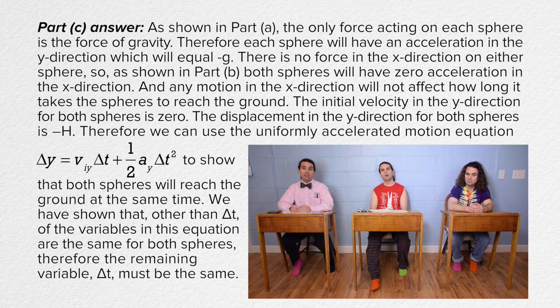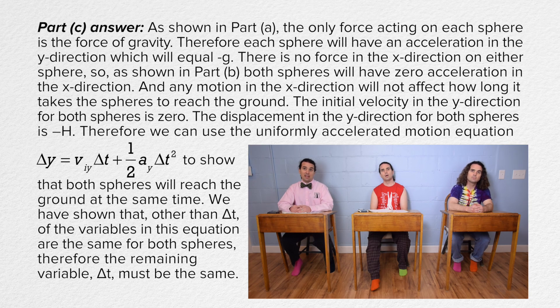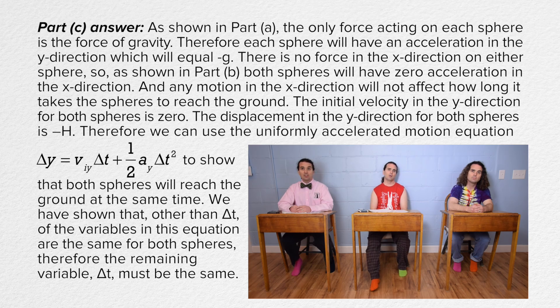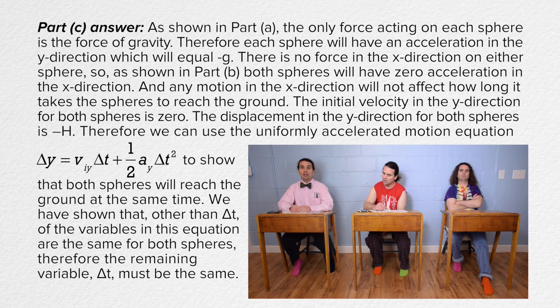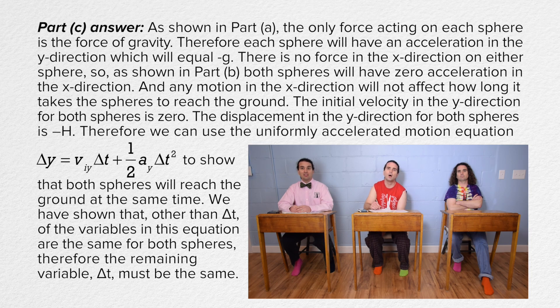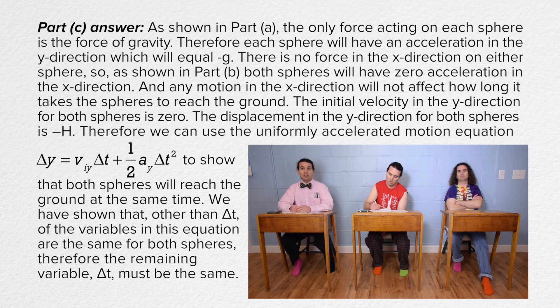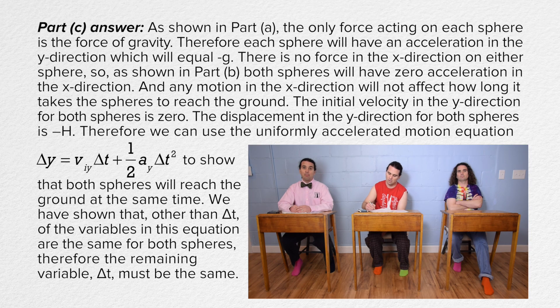The initial velocity in the y direction for both spheres is zero. The displacement in the y direction for both spheres is negative h. Therefore, we can use the uniformly accelerated motion equation, displacement in the y direction equals velocity initial in the y direction times change in time, plus one half times acceleration in the y direction times change in time squared, to show that both spheres will reach the ground at the same time. We have shown that, other than the change in time, all of the variables in this equation are the same for both spheres. Therefore, the remaining variable, change in time, must be the same.